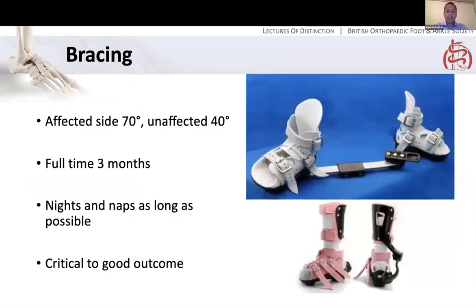After this, bracing is critical to a good outcome. The affected side is placed at 70 degrees of external rotation and the unaffected side at 40 degrees. Our protocol — and I think it's pretty standard — is full time for three months (23 hours a day, you can take it off to clean), and then nights and naps for as long as possible; if you can keep it going to four or five years, that's really good. There is a dose-response relationship between use of the boots and bars and the risk of relapse and recurrence.